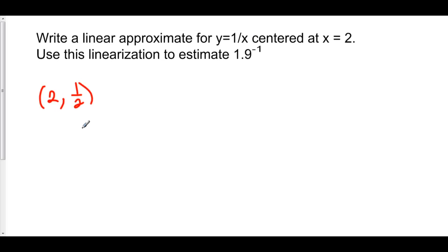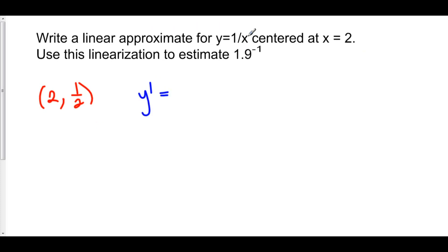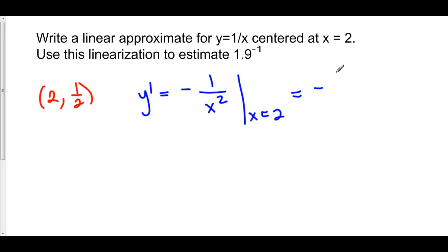To find the slope of this linear approximation, we have to find the derivative of y at x equals 2. y prime — here we have x to the negative 1. The derivative of x to the negative 1 is negative 1 over x squared. And at x equals 2, this is equal to negative 1 over 4. So we have our point and we have our slope.